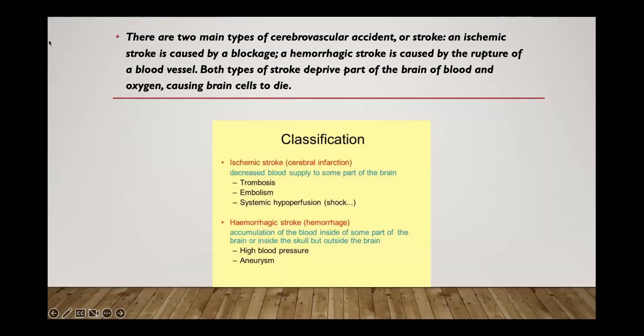There are two main types of the cerebrovascular accident or stroke. An ischemic stroke is caused by the blockage. A hemorrhagic stroke is caused by the rupture of a blood vessel. Both types of stroke deprive part of the brain of blood and oxygen, causing brain cells to die.